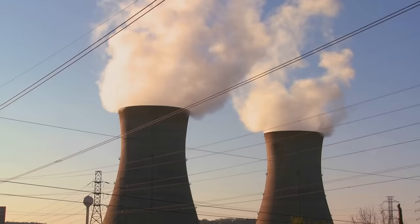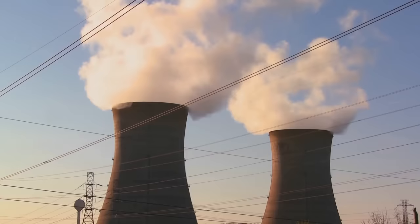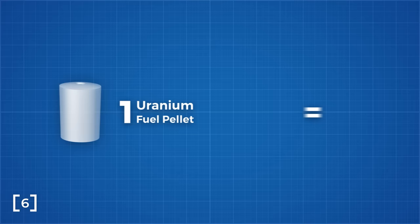A single uranium fuel pellet with the diameter of an AA battery has the potential to release the same amount of energy as 1 tonne of coal or half a tonne of natural gas. A little goes a long way.